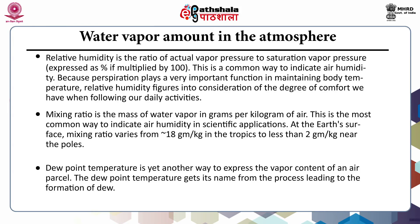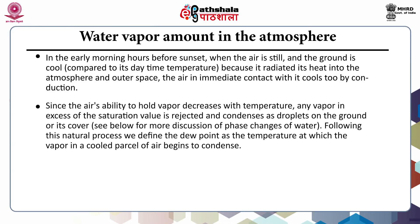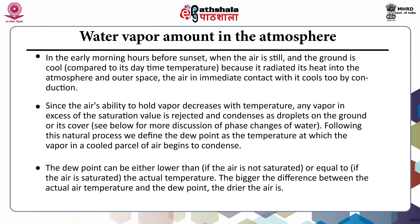Another measure is the dew point temperature — yet another way to express the vapor content of an air parcel. The dew point gets its name from the formation of dew. In early morning hours, when the air is still and the ground is cool, the air in immediate contact with the ground cools by conduction. Since the air's ability to hold vapor decreases with decreasing temperature, any vapor in excess of the saturation value condenses as droplets on the ground. The dew point is defined as the temperature at which vapor in a cooled parcel of air begins to condense. It can be lower than (if air is unsaturated) or equal to (if saturated) the actual temperature. A bigger difference between actual air temperature and dew point indicates drier air.